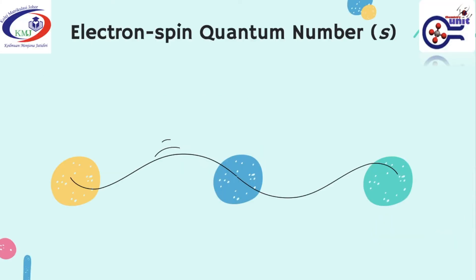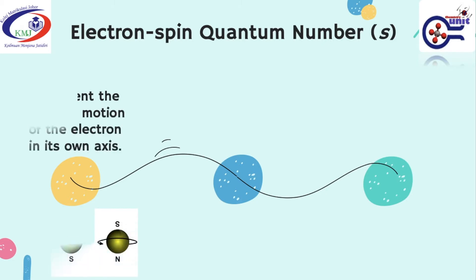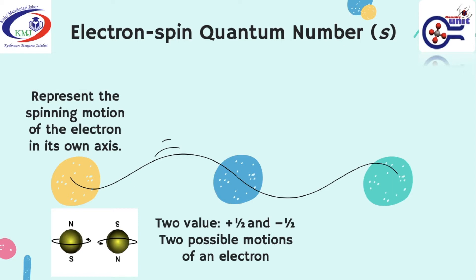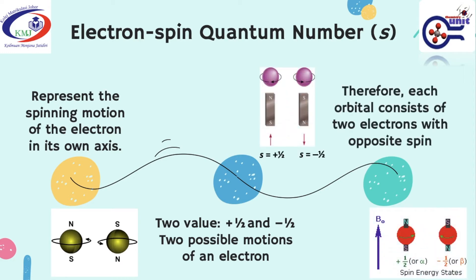The electron spin quantum number, using the symbol S, represents the spinning motion of the electron in its own axis. There are two values of electron spin quantum number: positive half and negative half. Those values indicate two possible motions of an electron. Therefore, each orbital consists of two electrons with opposite spin. The electron can spin clockwise or anticlockwise.